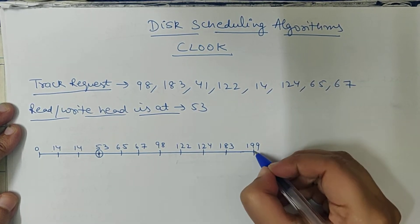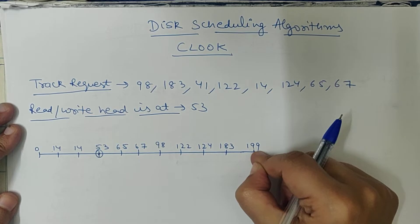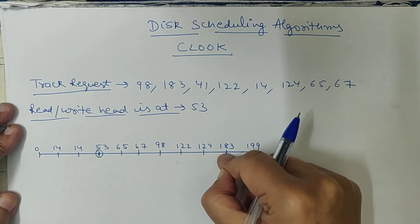Now what is the difference between CSCAN and CLOOK? We won't go to the end of the track. So SCAN and LOOK are similar, and CSCAN and CLOOK are similar. The difference in all four is just one: in CSCAN we go to the end of the track, in CLOOK we don't go to the end of the track, we go to the end of the request.